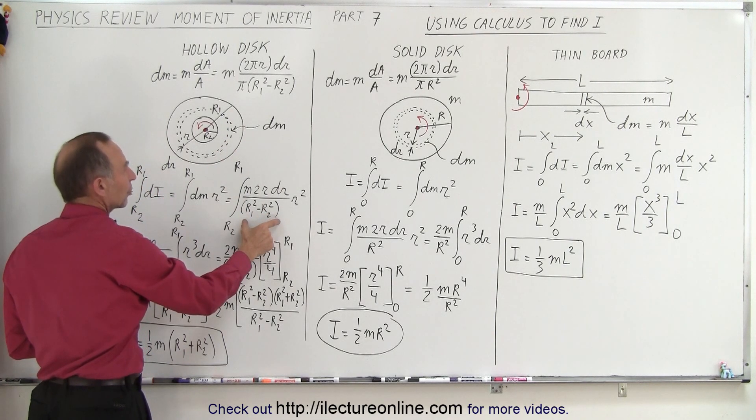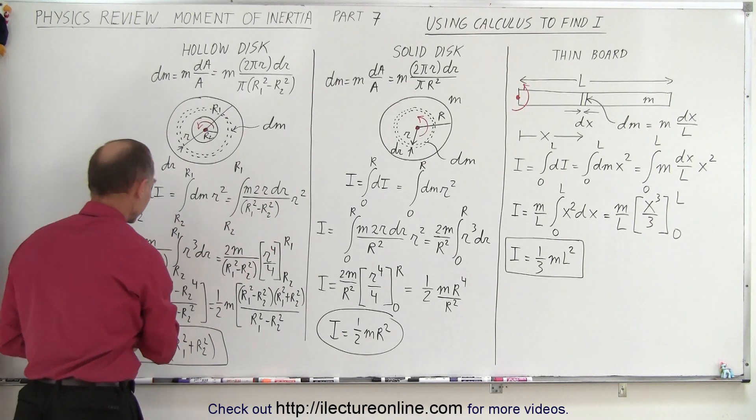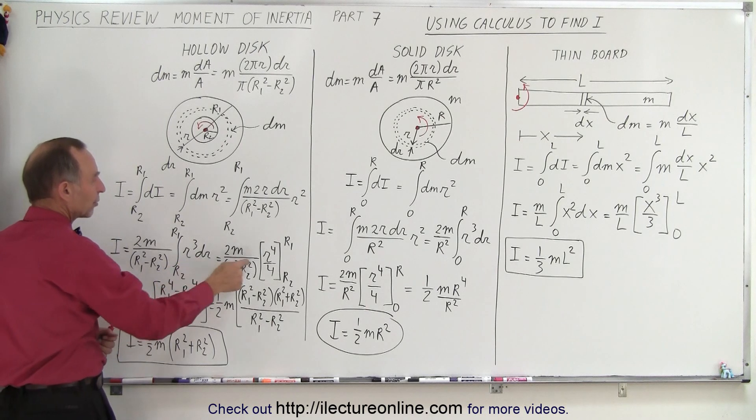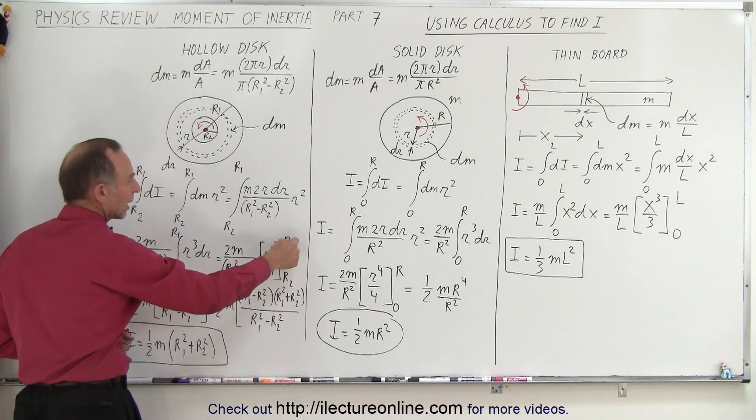So we replace dm by what dm is equal to. Now we have this r1 squared minus r2 squared in the denominator, but that's a constant. So it's 2 and m that comes out of the integral. And so we're left with r cubed dr, which becomes r to the 4th over 4, evaluated from the inner limit to the outer limit.